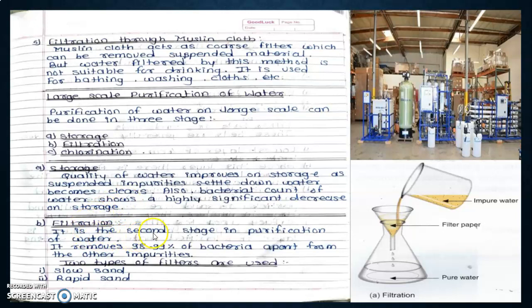Filtration is the second stage of purification of water. It removes 98 to 99% of bacteria apart from other impurities. Two types of filters are used: slow sand filtration and rapid sand filtration. This is impure water, this is filter paper, and this is pure water.